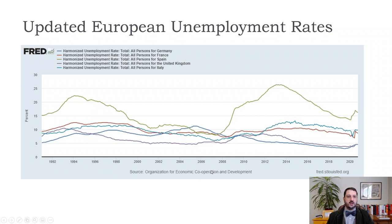Looking at updated European unemployment rates, Spain has had the weakest labor market. Many countries were around 10 percent around 2006, as seen in the earlier data. France and Italy are still around 10 percent, while Germany and the UK are both below five percent.